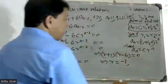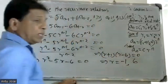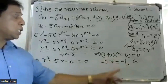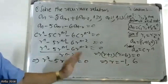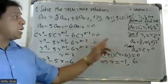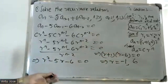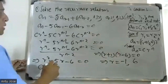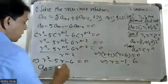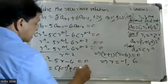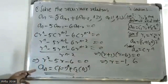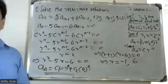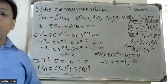Solving the characteristic equation, we get r = 6 and r = −1. The roots are real and distinct. Therefore, the general solution is: aₙ = c₁·(−1)^n + c₂·6^n. Now we apply the boundary conditions to find c₁ and c₂.